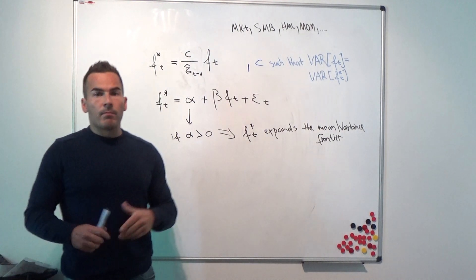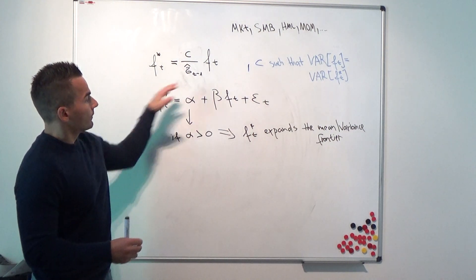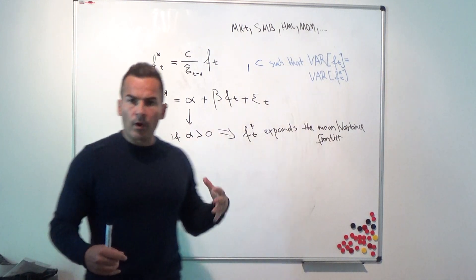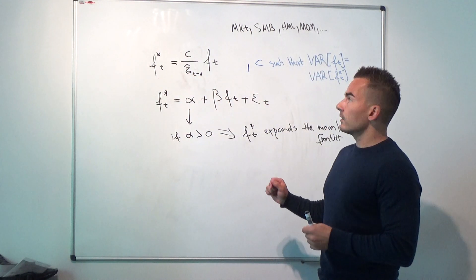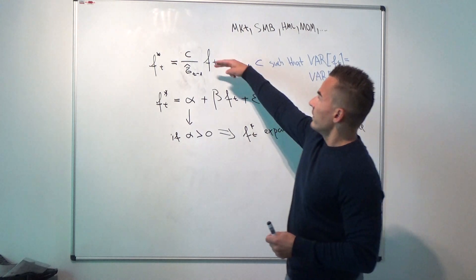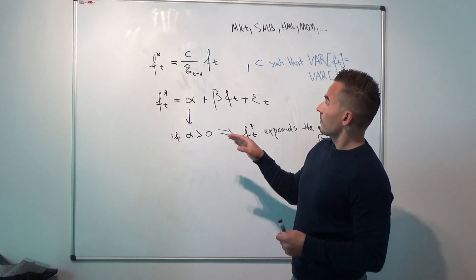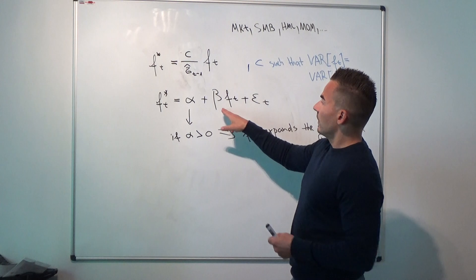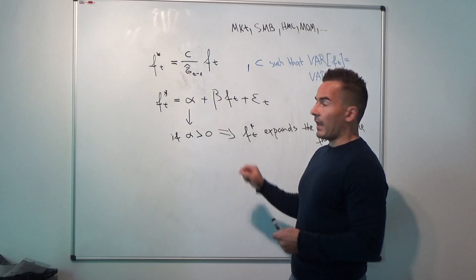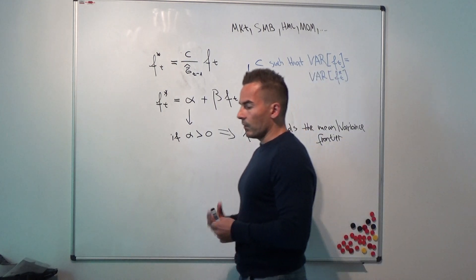But what's the problem with that approach, or if we basically run this regression? The problem is that all this information here is ex-post. Even c is determined ex-post. We need the whole data set, the ex-post data set, in order to determine the alpha and the beta.